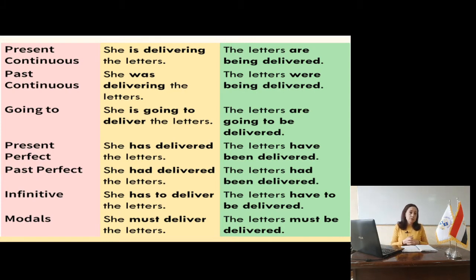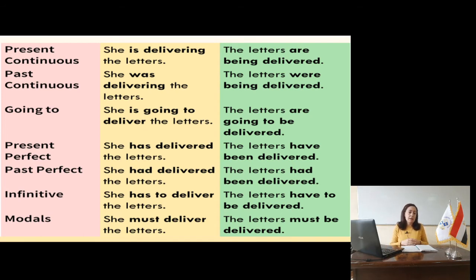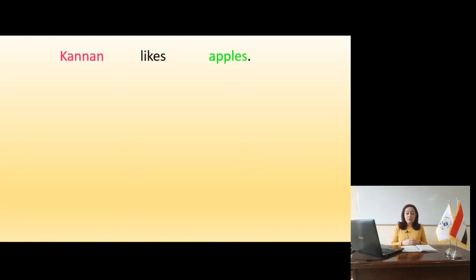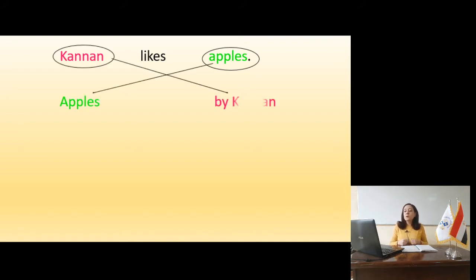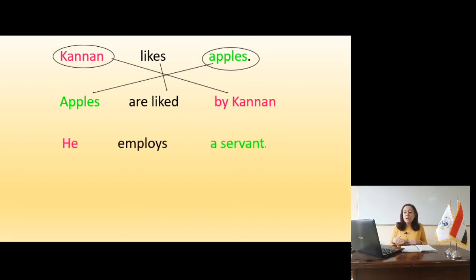Moving to slide 8 — we have practice examples. For instance: 'Canon likes apples.' Canon is the subject, likes is the verb, apples is the object. Begin with the object — apples — then verb to be in the present simple, which for 'apples' is 'are.' Then past participle of 'like,' which is 'liked.' So: 'Apples are liked by Canon.'